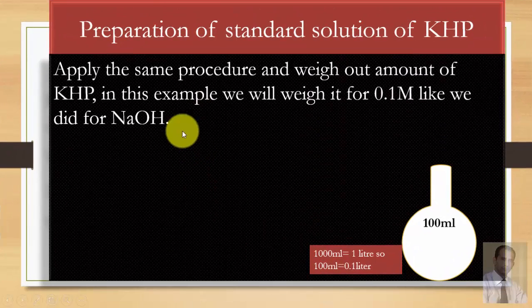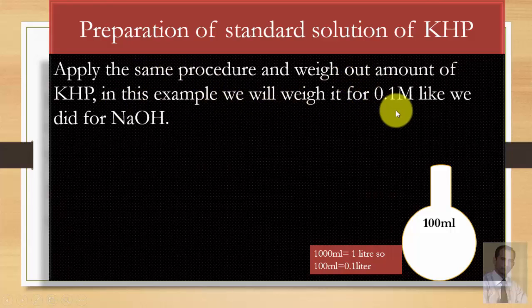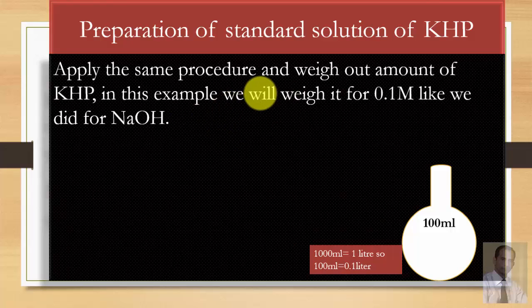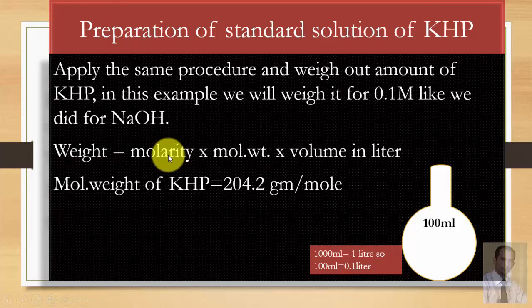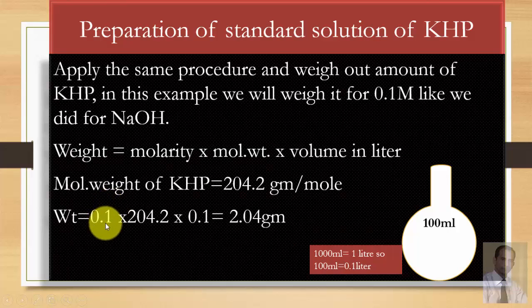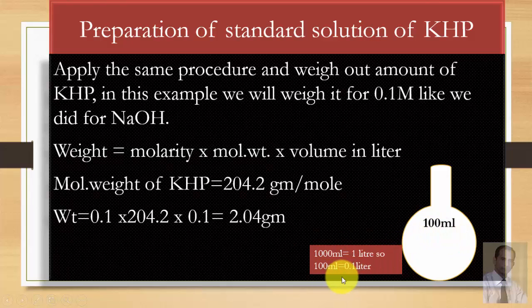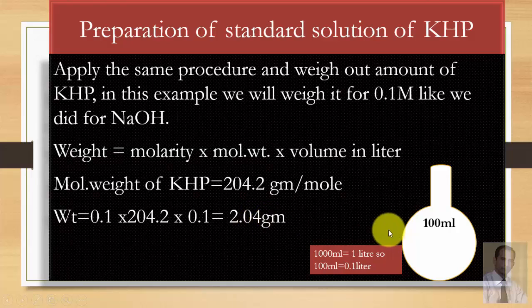To prepare a standard solution of KHP, we apply the same procedure and weigh out the required amount. We will prepare a 0.1 molar KHP solution: molarity = 0.1, molecular weight = 204.2, volume = 0.1 liter (100 mL). This gives a weight of 2.04 grams. We dissolve 2.04 grams of KHP into a 100 mL flask to get a 0.1 molar standard solution. Keep in mind this is the standard solution — its concentration is exactly known.